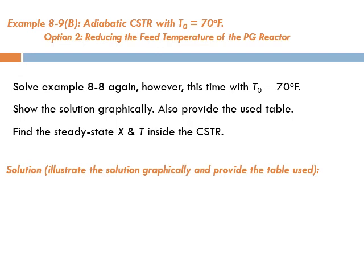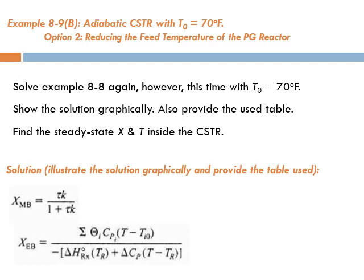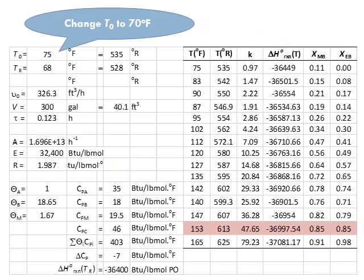The solution is going to be graphical and we'll also provide the table. There are no changes at all in the mole balance and energy balance compared to Example 8.8. What I suggest is to go to the file with tab 8.8, right-click, copy or move and copy, make a copy to another tab, and call this new tab 8.9B. It's exactly the same as 8.8 - the only change is that we're going to change the feed temperature, which only appears in the energy balance equation.